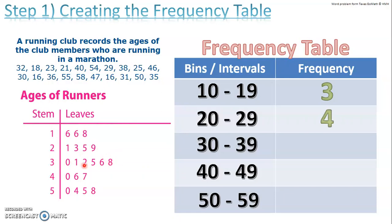For 30, we have 1, 2, 3, 4, 5, 6 numbers between 30 and 39. We have 3 numbers between 40 and 49. And we have 4 numbers between 50 and 59.